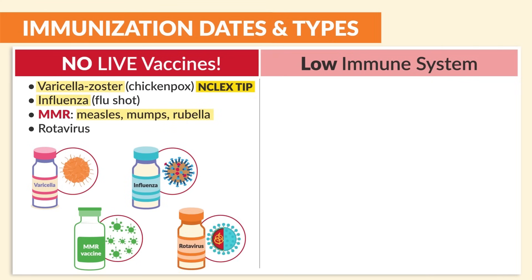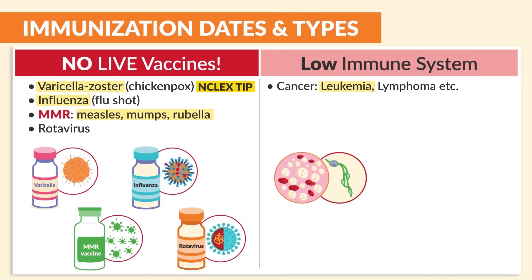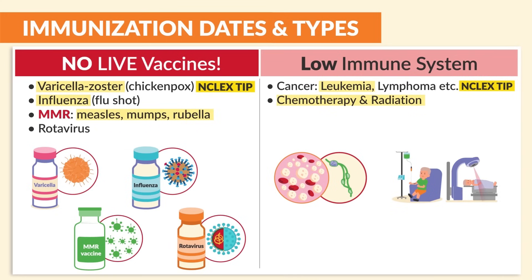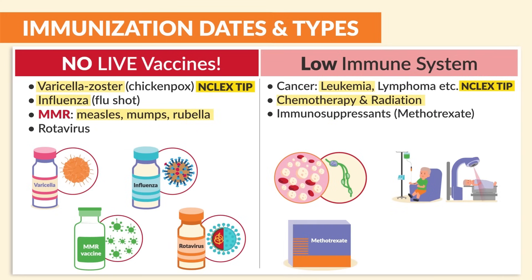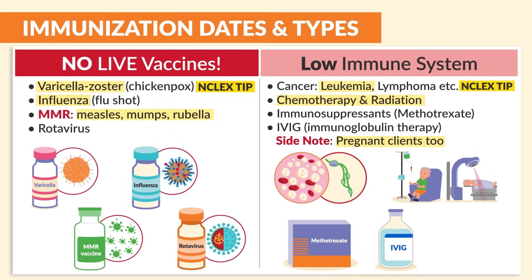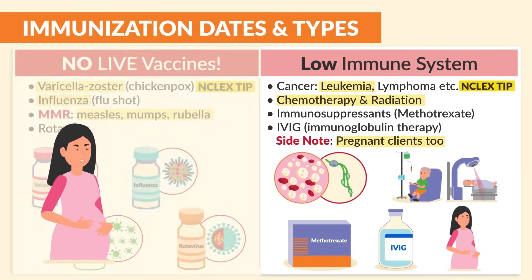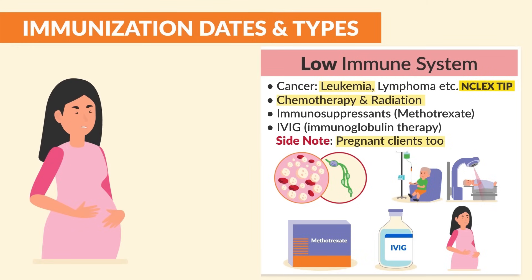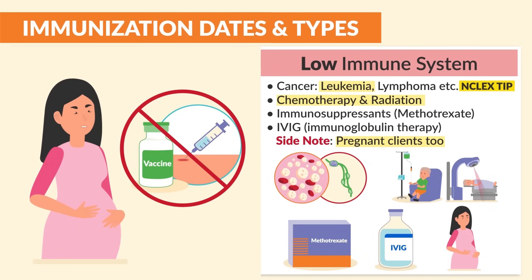For low immune system clients that are commonly tested: clients who have cancer, specifically leukemia and lymphoma — this was top tested — as well as clients undergoing chemotherapy and radiation, clients on immunosuppressants like methotrexate, and even IVIG immunoglobulin therapy. As a big side note, pregnant clients too. They don't necessarily have a low immune system, but we don't give any live vaccines.